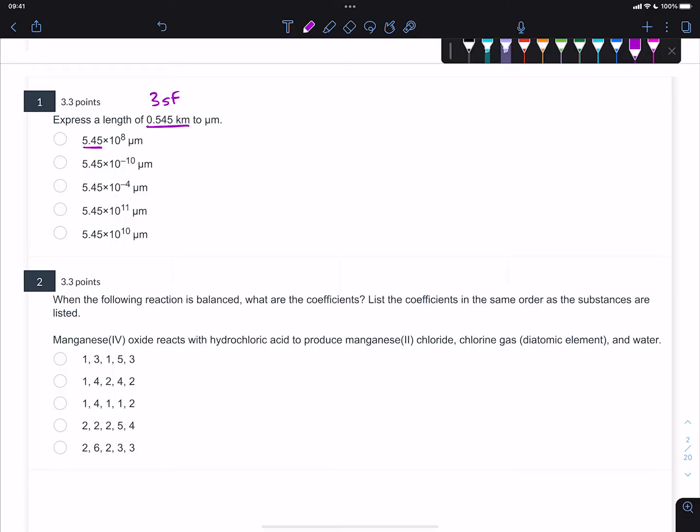So it makes sense that all of our answer options also have three sig figs. When you're looking at scientific notation, everything before the multiplication symbol, which is the coefficient or the mantissa, is considered significant. So that's just verifying what we already see.